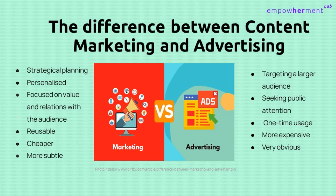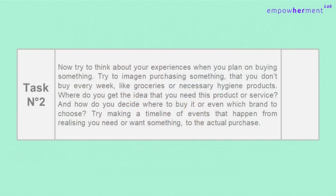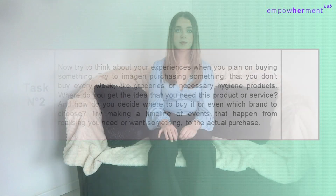To understand this more clearly, let's first learn about the buyer's journey. Try to think about your experiences when you plan on buying something — something that you don't buy every week, like groceries or necessary hygiene products. Where do you get the idea that you need this product or service? And how do you decide where to buy it or even which brand to choose? Try making a timeline of events that happen from realizing you need or want something to the actual purchase. That timeline has a name — it's called the buyer's journey, also called the buying cycle, which refers to the different stages of a person's process when purchasing a product or paying for a service.